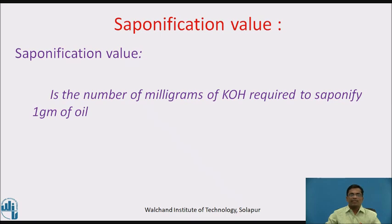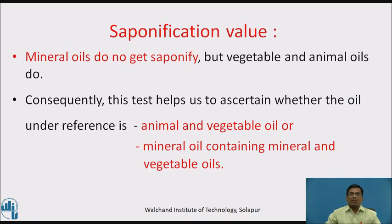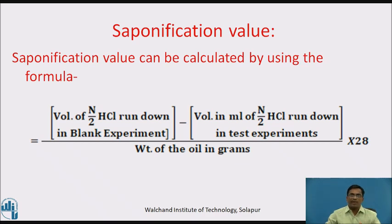Saponification value — definition: the saponification value is the number of milligrams of potassium hydroxide required to saponify 1 gram of oil. Mineral oils do not get saponified, but vegetable and animal oils do. This test helps us ascertain whether the oil is an animal or vegetable oil, or a mineral oil containing mineral and vegetable oil. The saponification value is calculated as: Saponification Value = [(volume of N/2 HCl run down in blank experiment) − (volume of N/2 HCl run down in test experiment)] ÷ (weight of oil in grams) × 28.